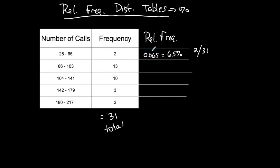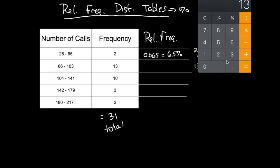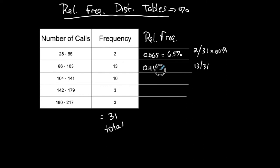A relative frequency is either the decimal or percent version of that class — you take the part over the whole, and multiply by 100% to convert to a percent. For the second class, I take 13 out of 31, which gives 0.419, or 41.9% of the data values are within 66 to 103 inclusive.